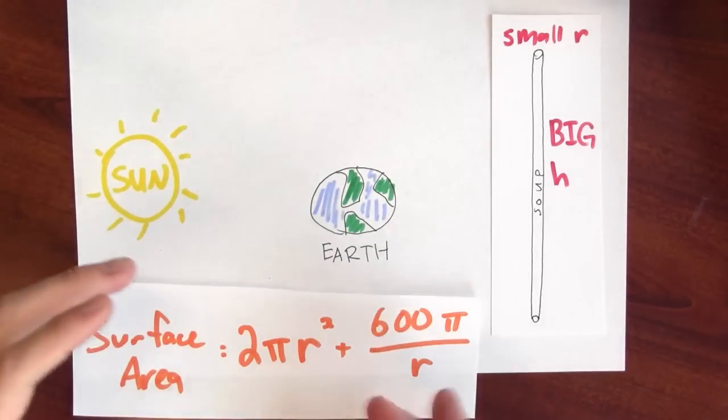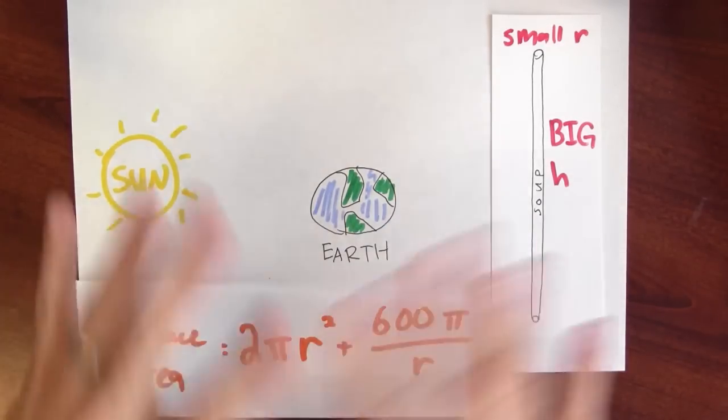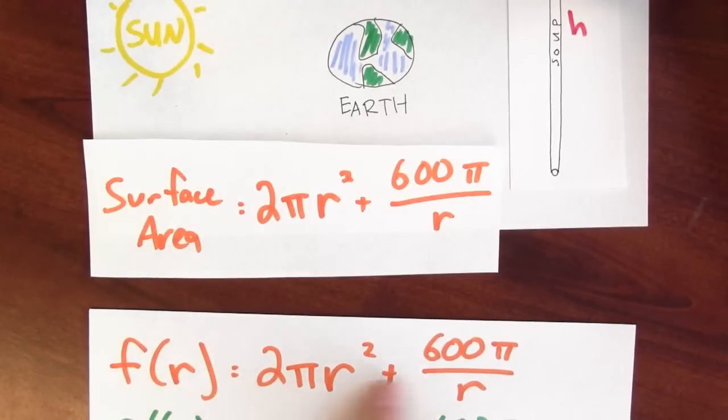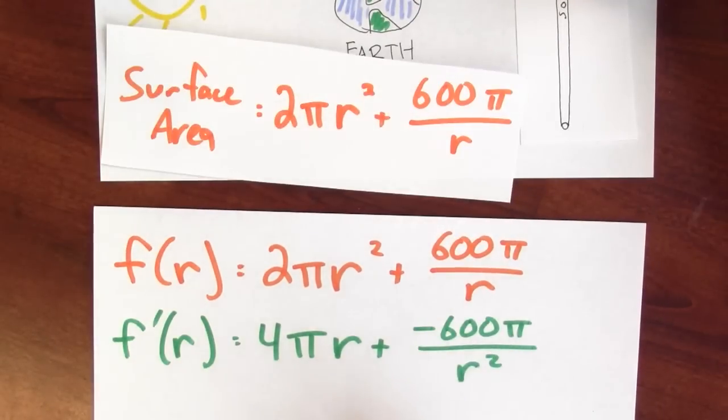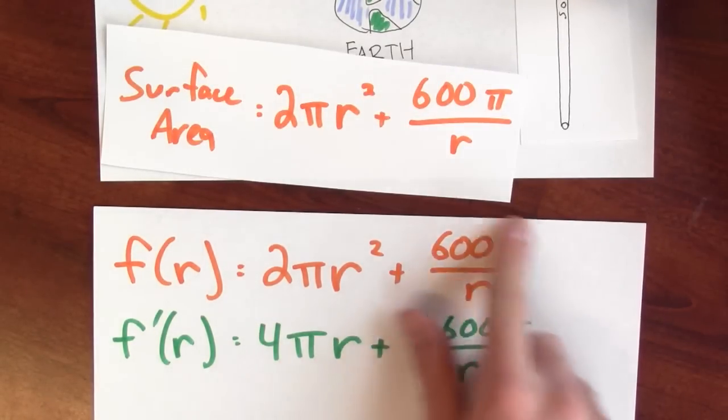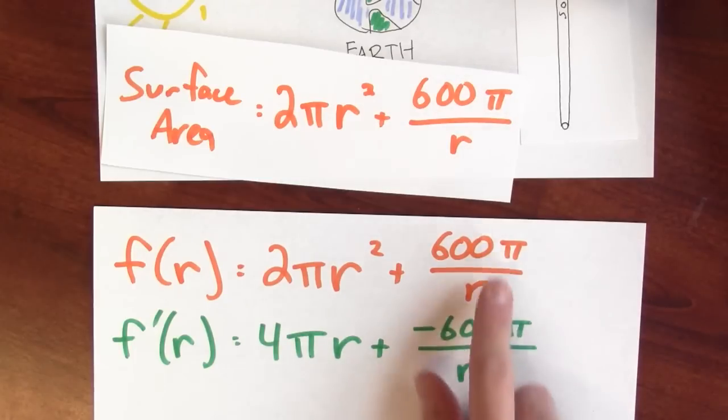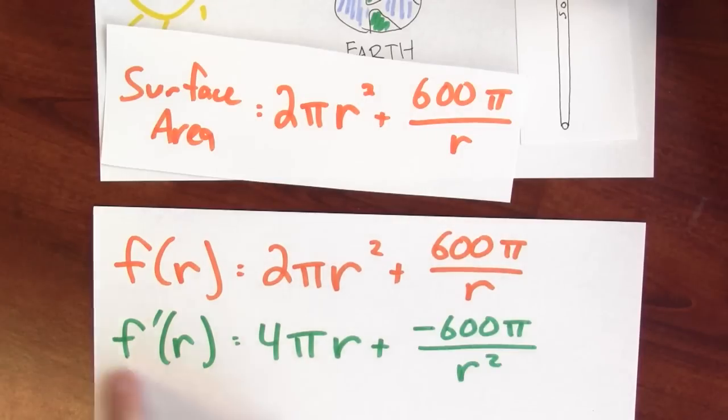I'm going to think of the surface area as a function of a single variable r. Here it is, f of r is 2 pi r squared plus 600 pi over r. And I'm going to differentiate, and here's the derivative. I differentiate 2 pi r squared to get 4 pi r. And I differentiate this number divided by r. Well, 1 over r is negative 1 over r squared, that's its derivative. Then I multiply by 600 pi. So this is the derivative of this.